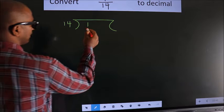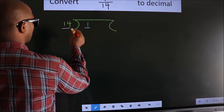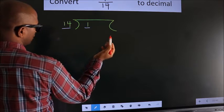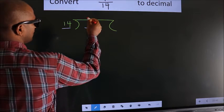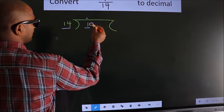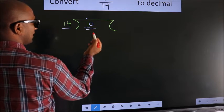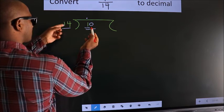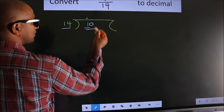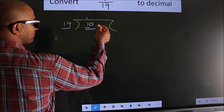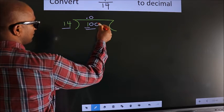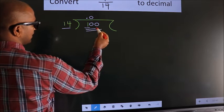Here we have 1, here 14. 1 is smaller than 14. So what we should do is put a dot here and take 0 here, so 10. 10 is still smaller than 14. So to get one more 0 here, we put 0 here to get 0 here. So 100.